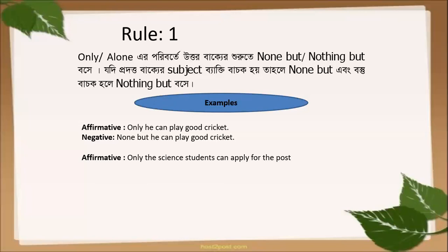As in this sentence: 'Only the science students can apply for this post.' We find a subject — some persons are working as a subject. Students are persons. So we have to put 'none but' here. The answer is: 'None but the science students can apply for the post.'